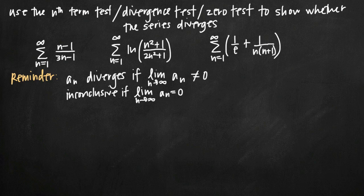Today we're going to be talking about how to use the nth term test to try to show whether a series diverges. The nth term test is also called the divergence test, and you'll also hear it called the zero test. It's all the same test, just called different things, so you'll see it by different names.